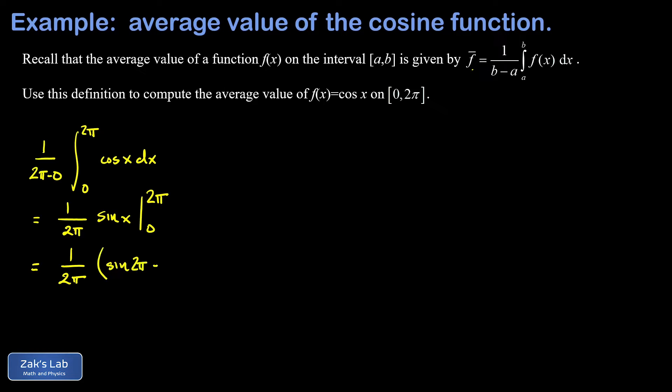Plugging in the lower limit, the sine of zero, and both of these vanish. The sine of two pi and the sine of zero are both zero, so I end up with an average value of zero.